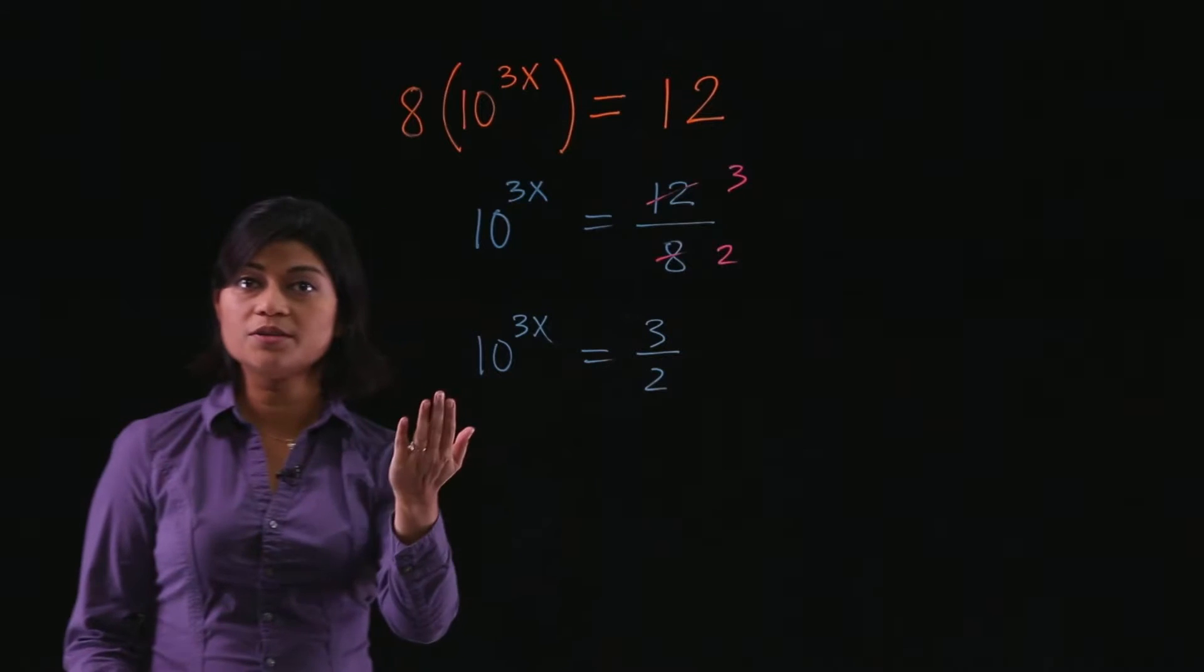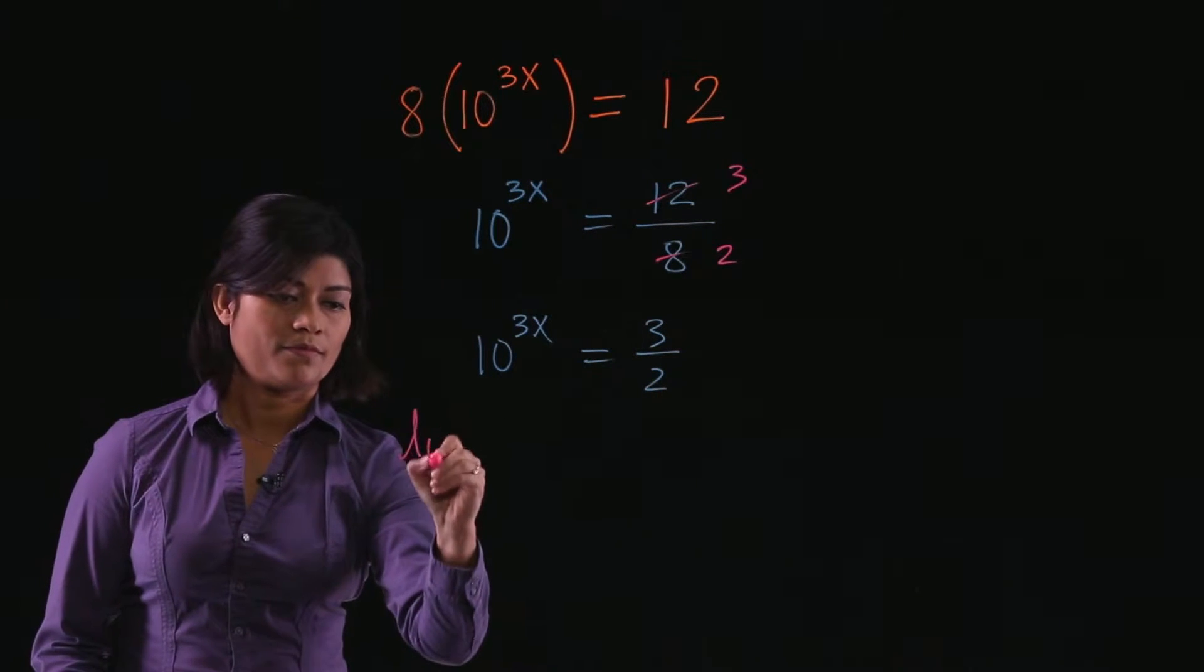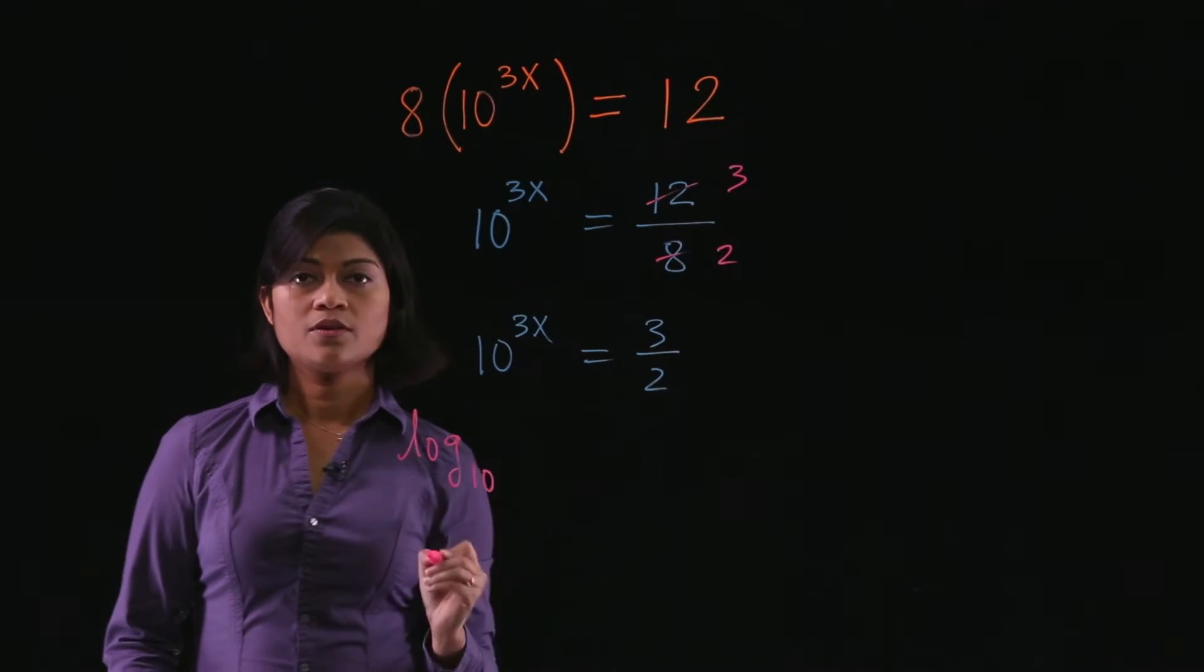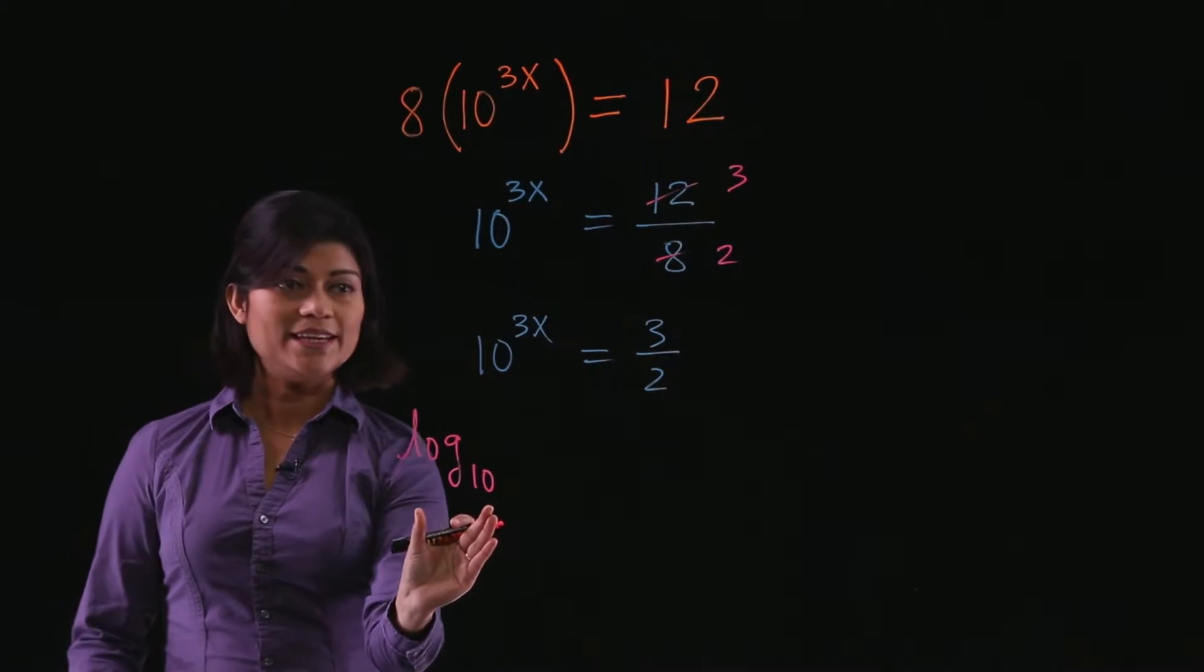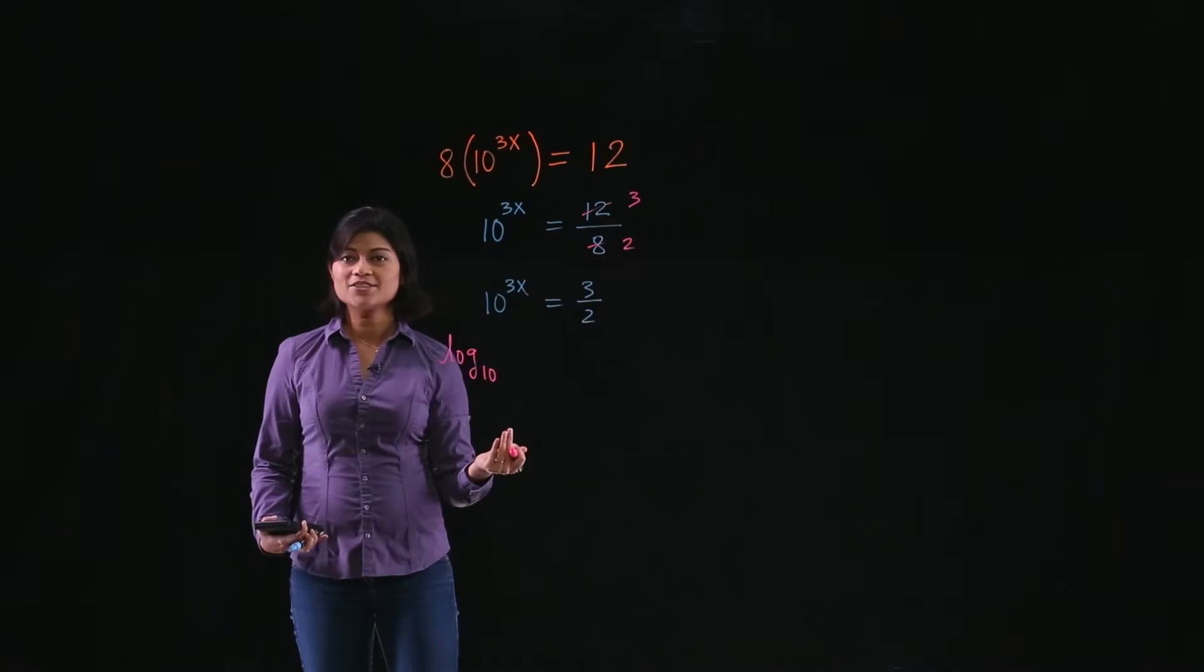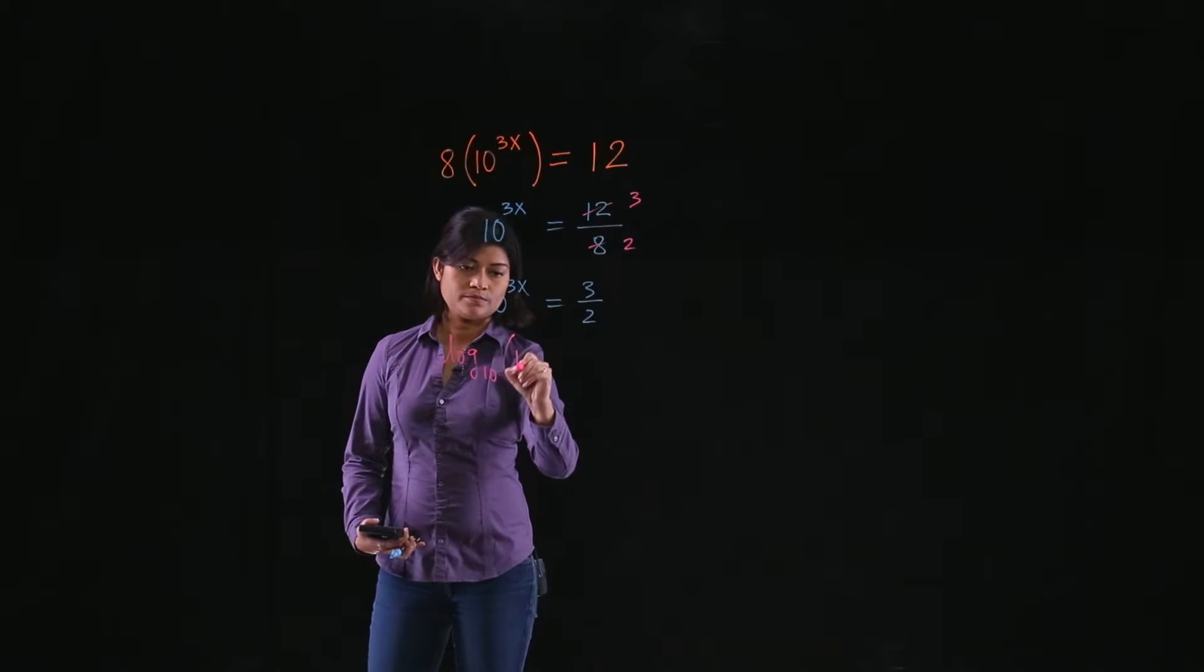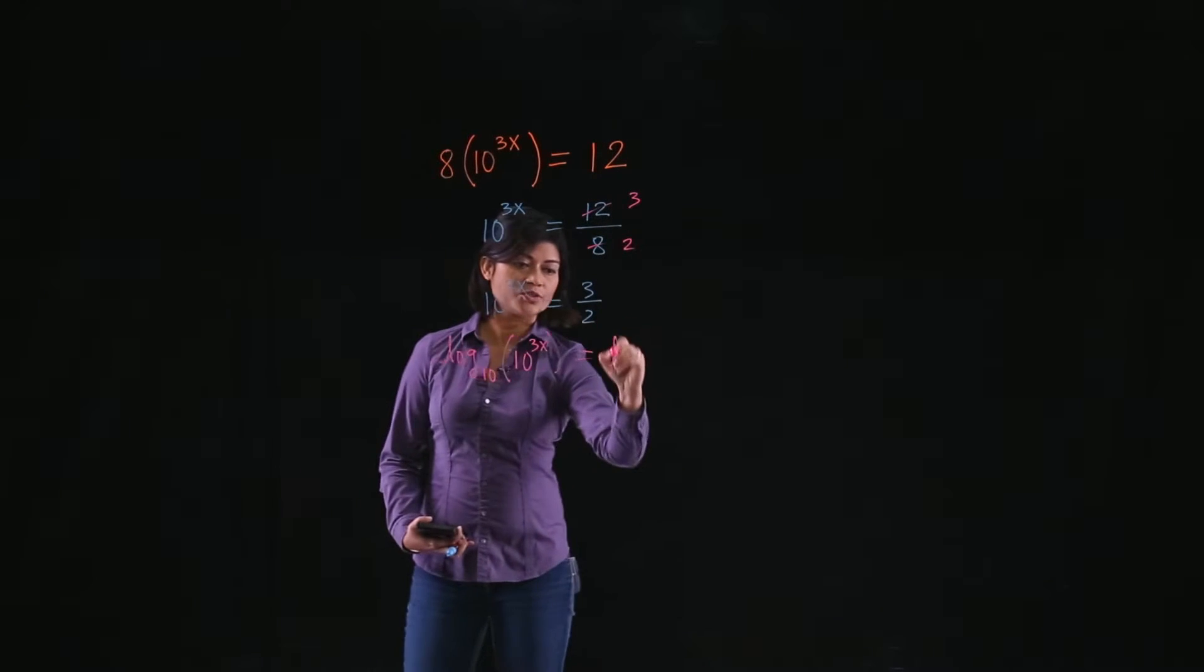Therefore, you should apply logarithm base 10. Why we are doing that? Because this logarithm is inverse to this exponential, and so they will cancel each other. So apply logarithm base 10 to both sides.